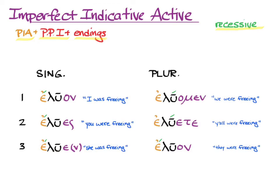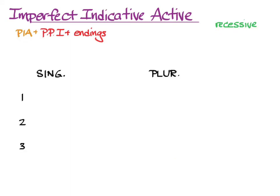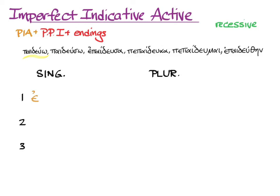Let's try it with another verb. Here's paideuo in all its six principal parts. We go to the first principal part, start with the augment, add our stem, add the ending, and the recessive accent. So we get epaideoun, I was educating.